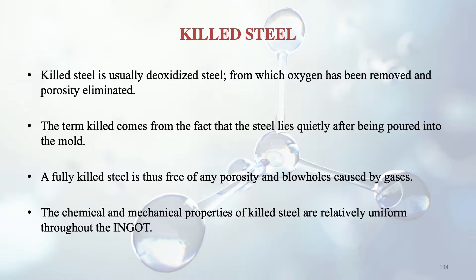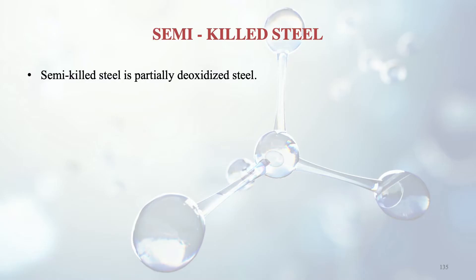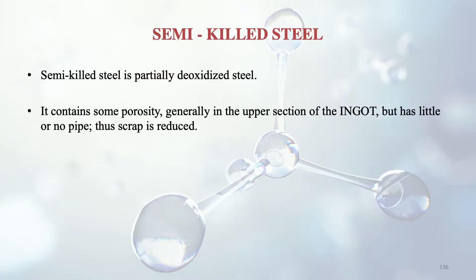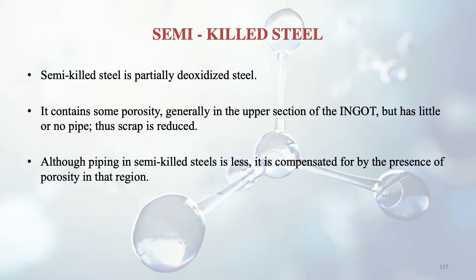Semi-killed steel is partially de-oxidized steel — only partial oxygen removal is done. It contains some porosity, generally in the upper section of the ingot, but has little or no piping. Although piping in semi-killed steels is less, it is compensated for by the presence of porosity in that region. Semi-killed steels are economical since the de-oxidation process is quite costly.